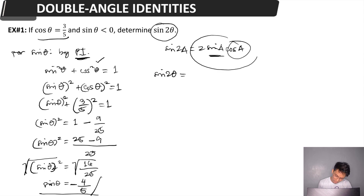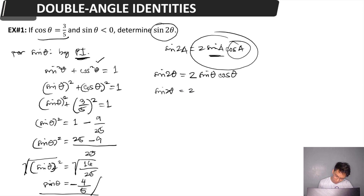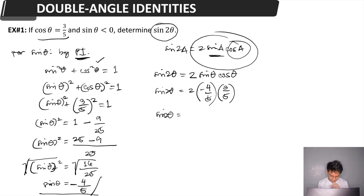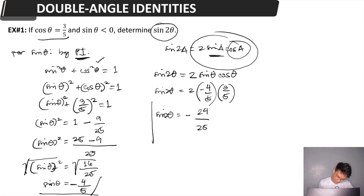Using the double angle identity for sine: sine 2 theta equals 2 times sine theta times cosine theta. Sine theta is negative 4 over 5 and cosine theta is 3 over 5. So sine 2 theta equals 2 times (negative 4 over 5) times (3 over 5). Multiplying: 2 times 4 times 3 equals 24, and 5 times 5 equals 25. Therefore sine 2 theta equals negative 24 over 25.